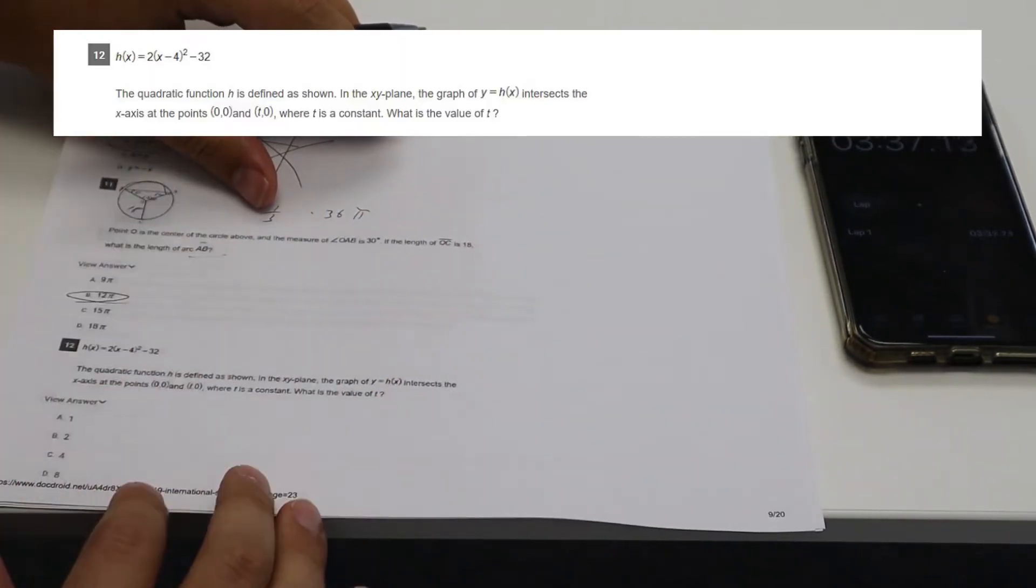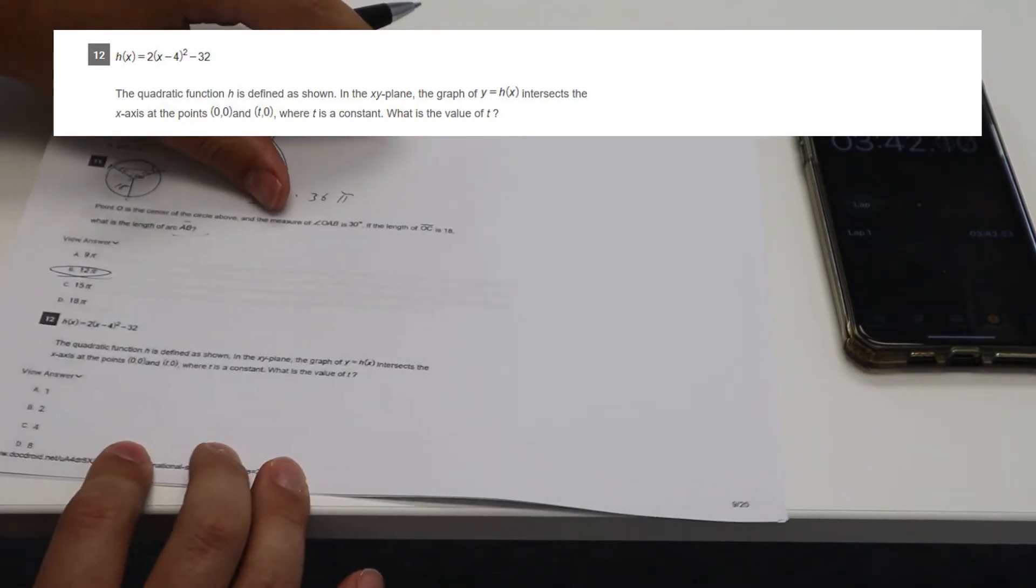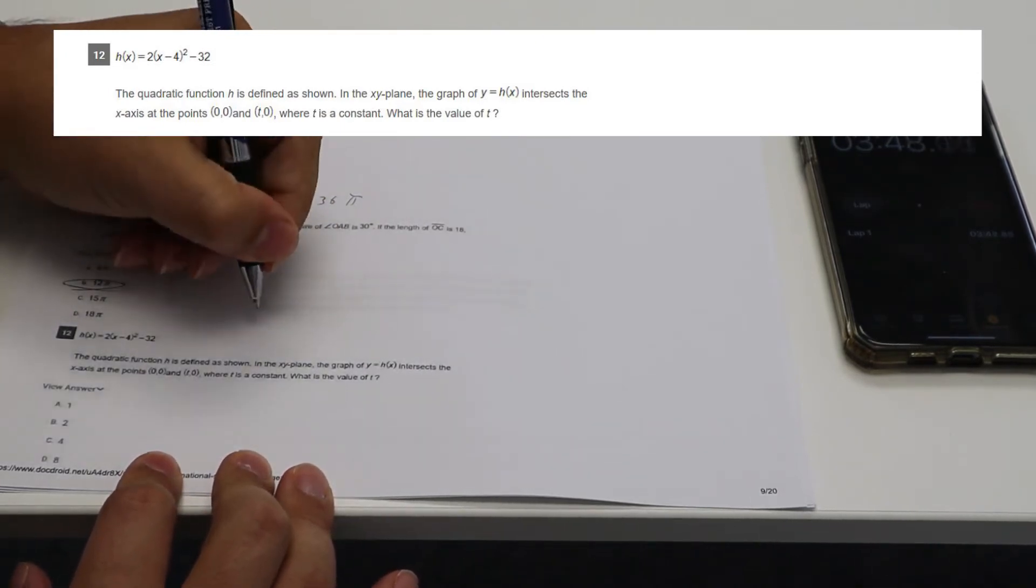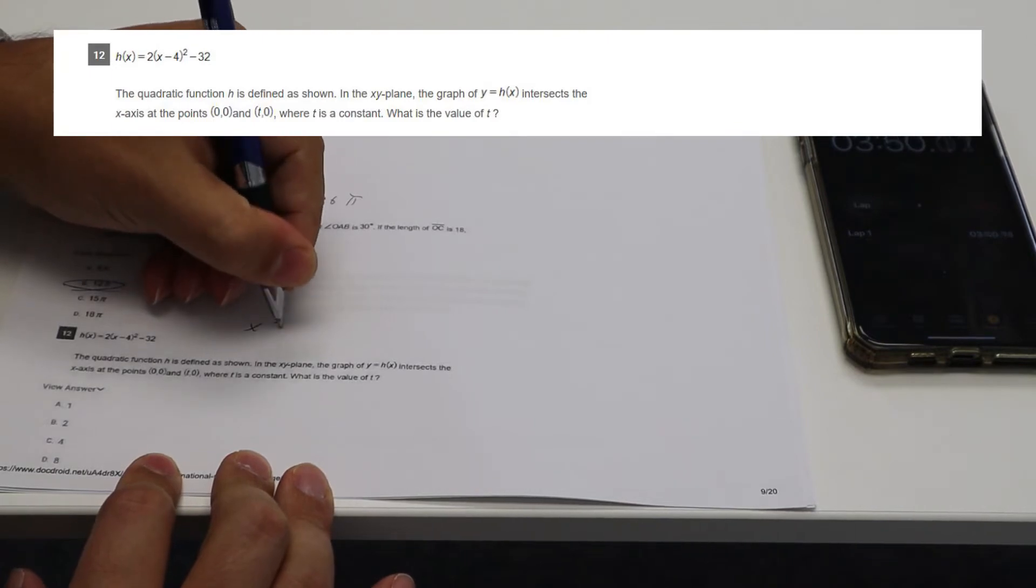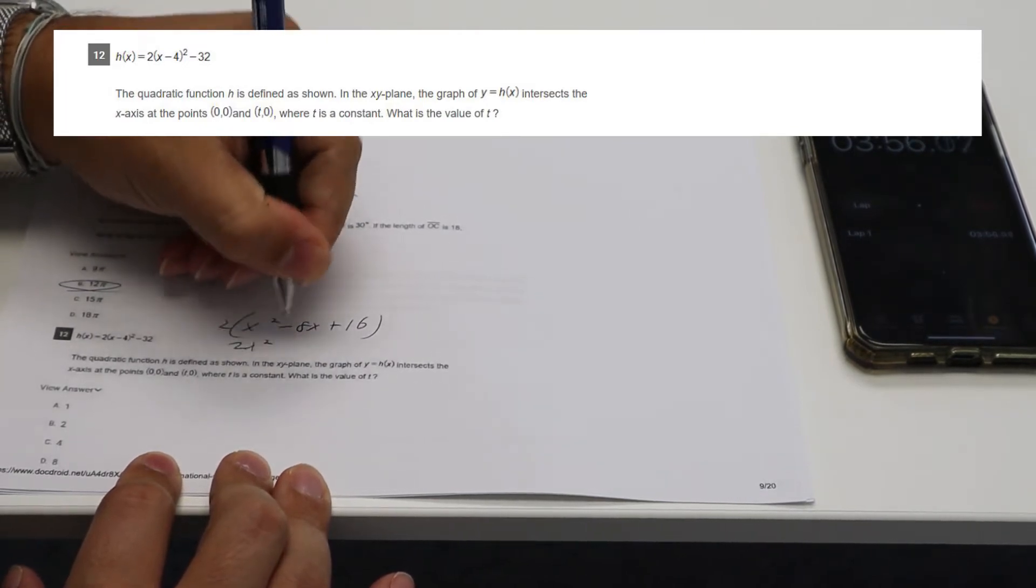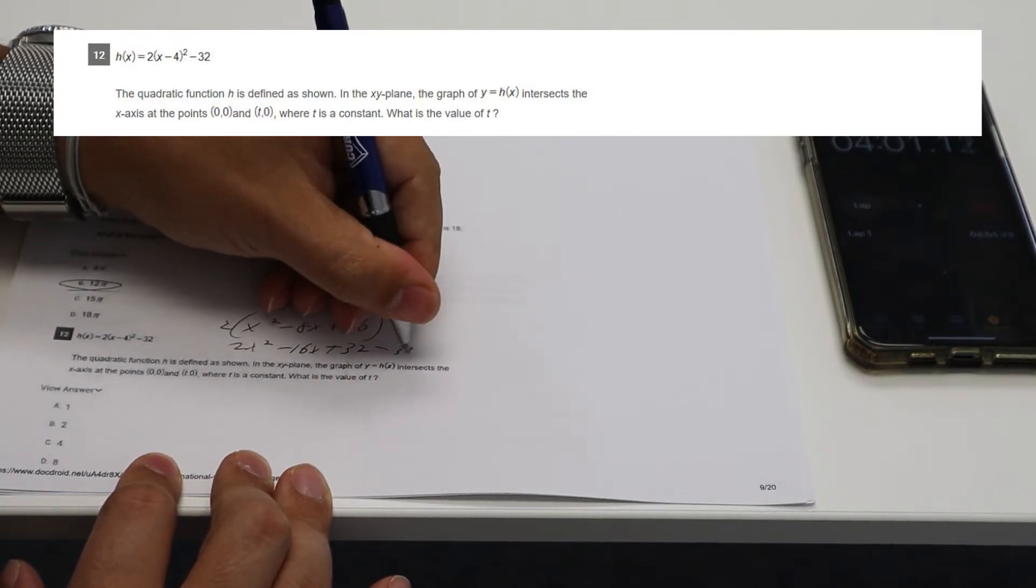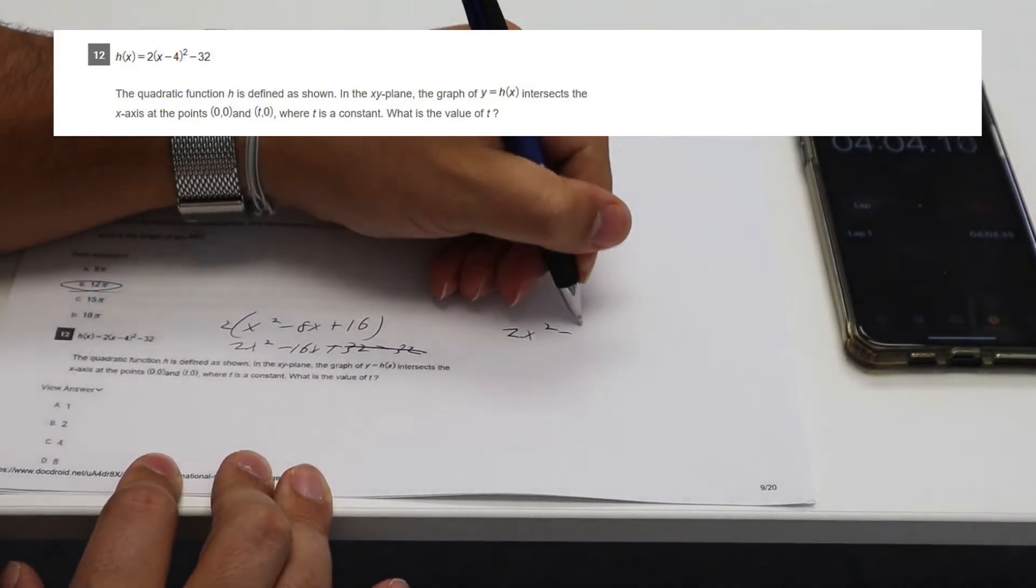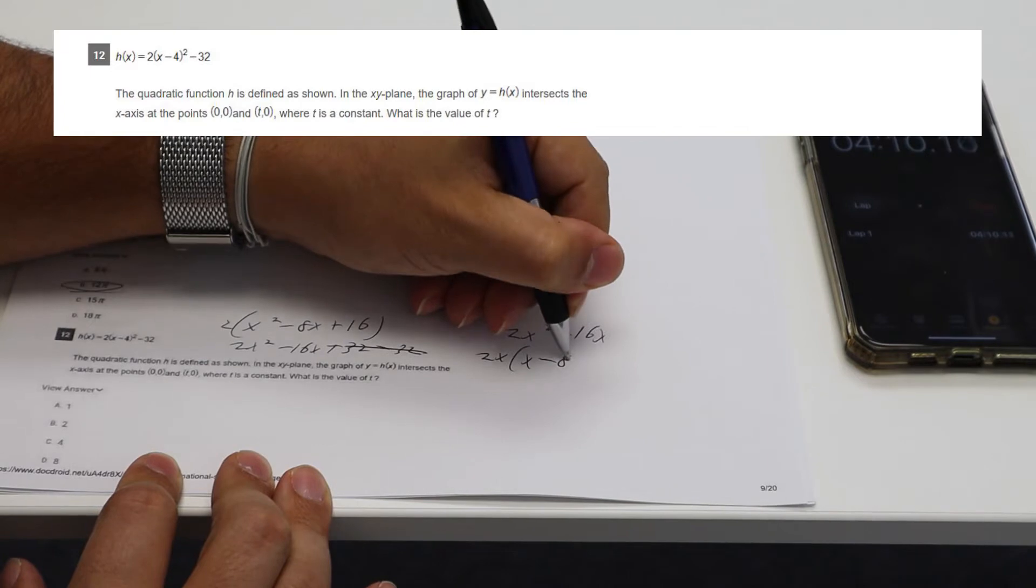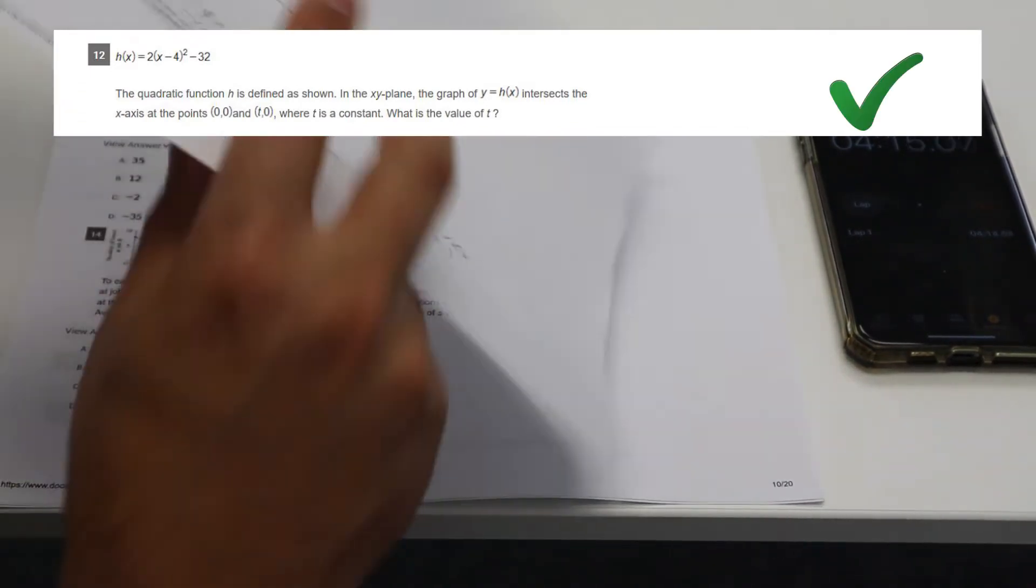The quadratic function H is defined as shown. This is annoying. So we could just plug in, but we could also solve. So let's see X squared minus eight X plus 16 times two would be two X squared minus 16 X plus 32 minus 32. Those cancel out two X squared minus 16 X. So factor out of two X, X minus eight.